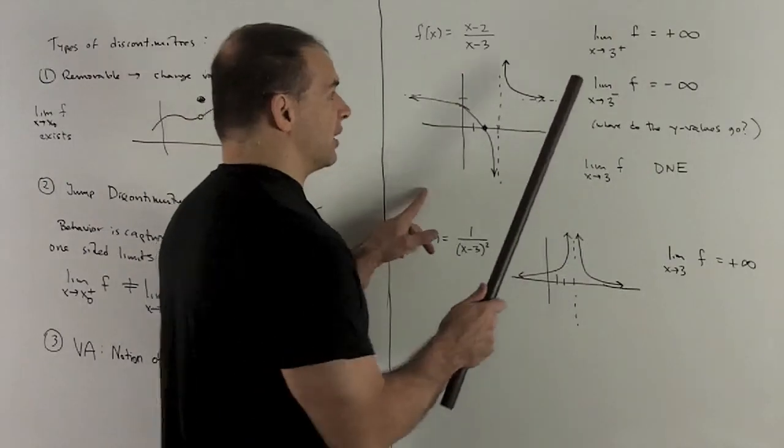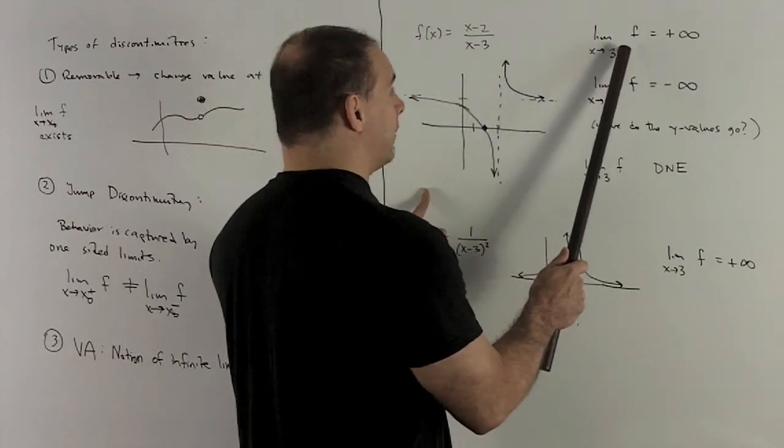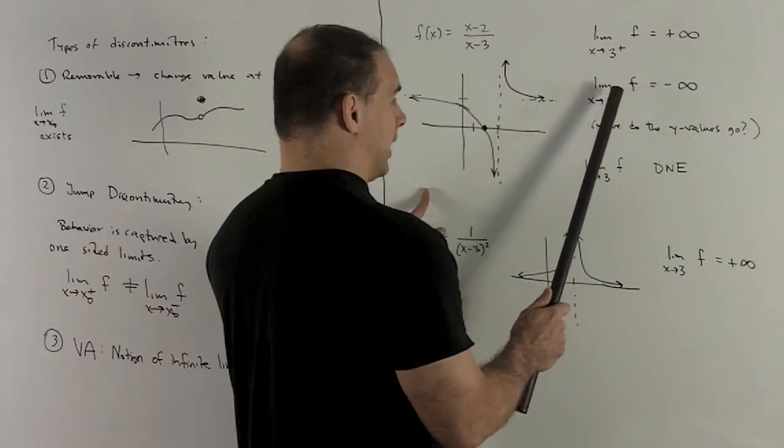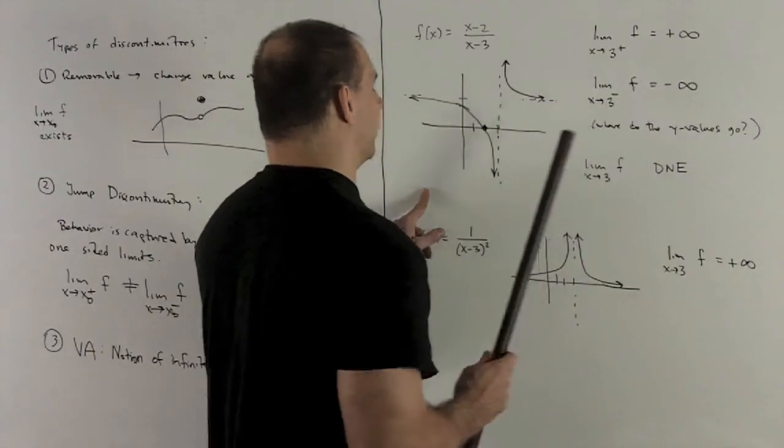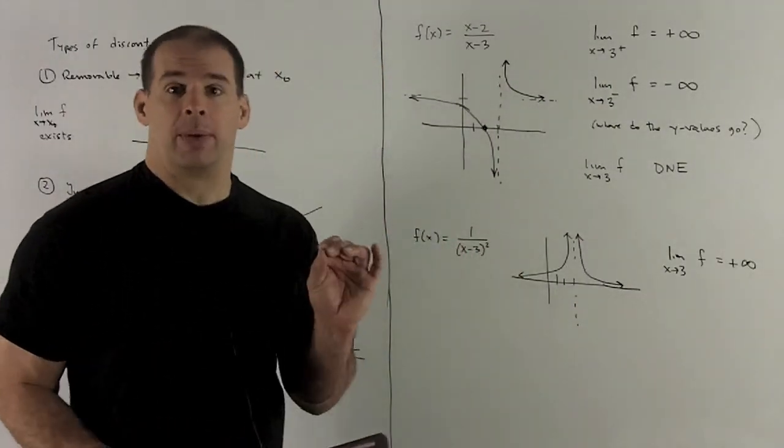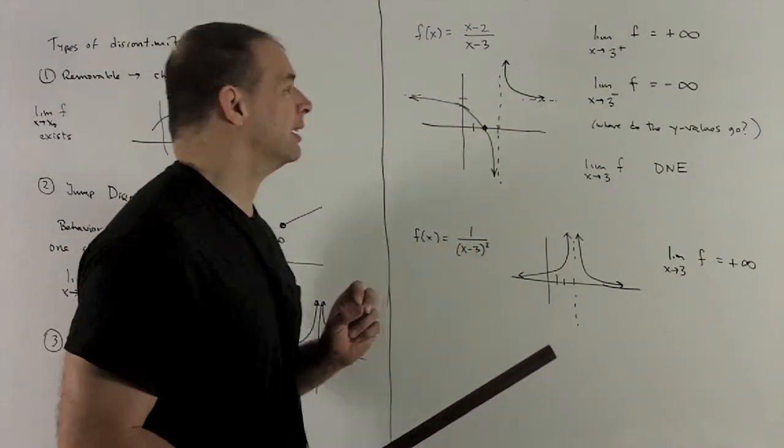So the way I would write this is, okay, limit of f, x goes from 3 from the right, plus infinity, limit x goes from 3 from the left of f is minus infinity. So really all we're doing is, as usual with the limit, we're keeping track of where the y values are going.